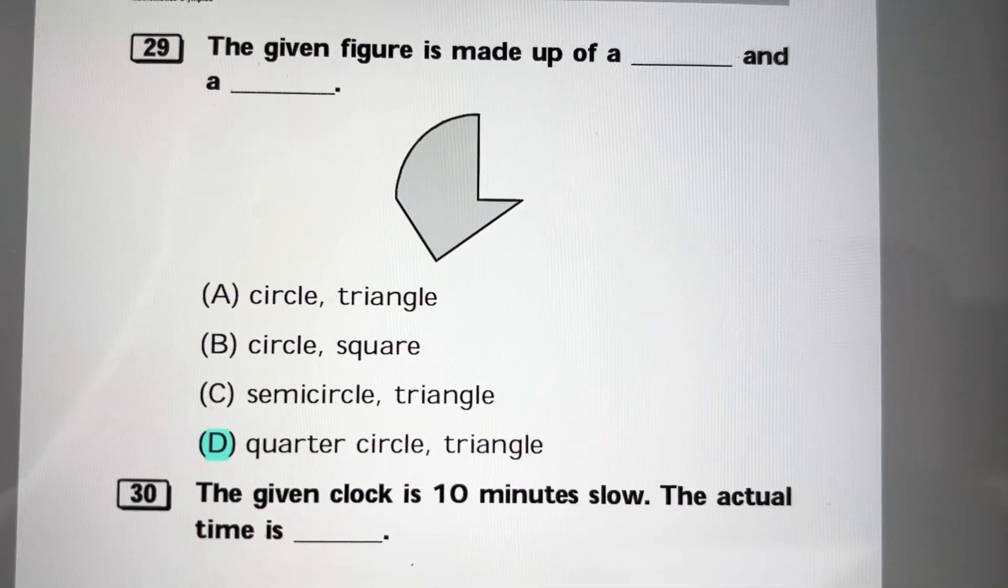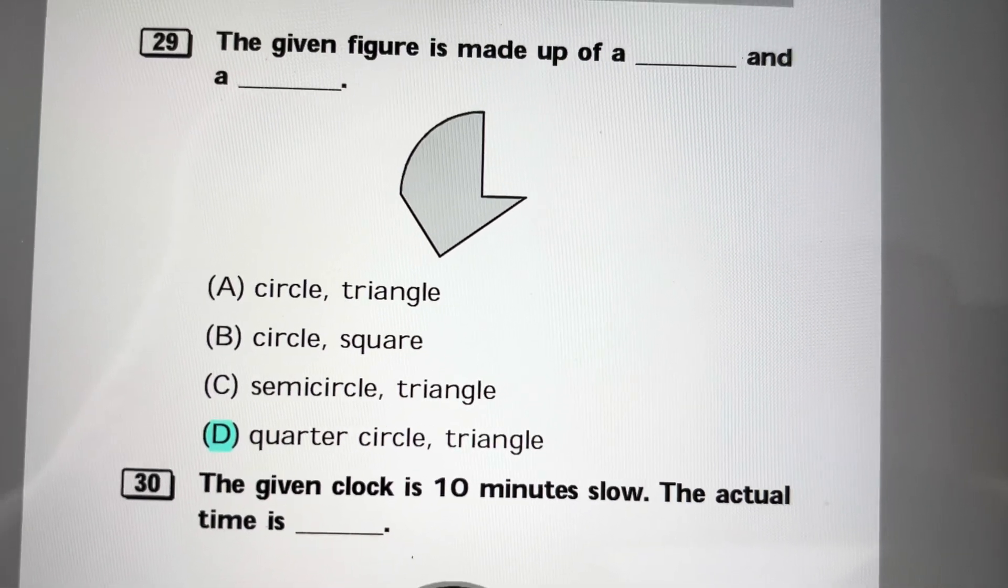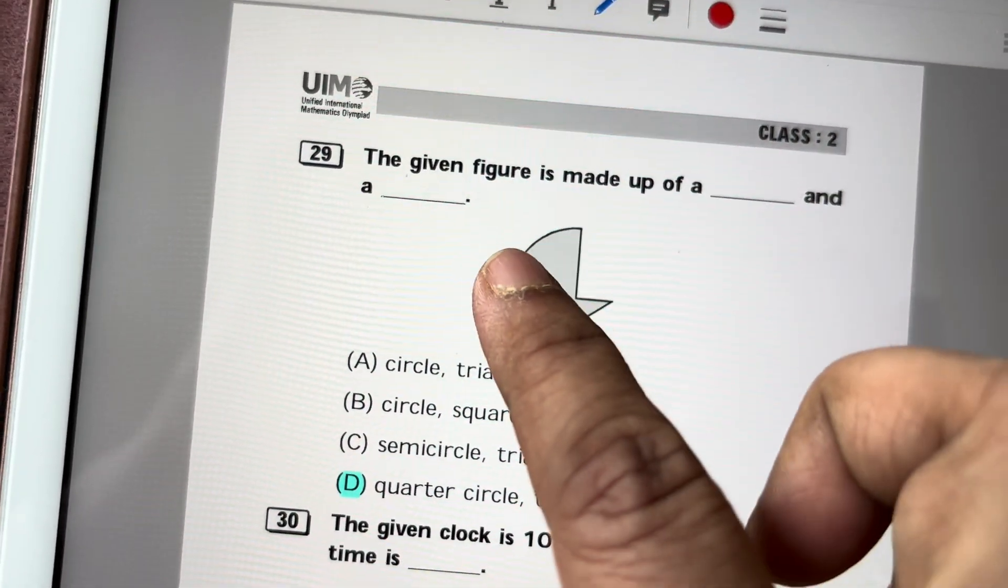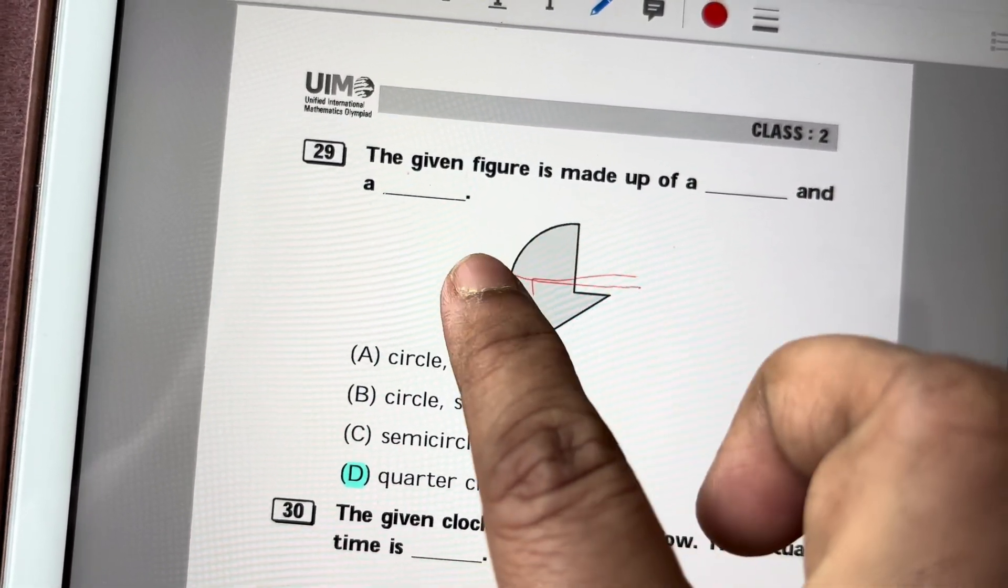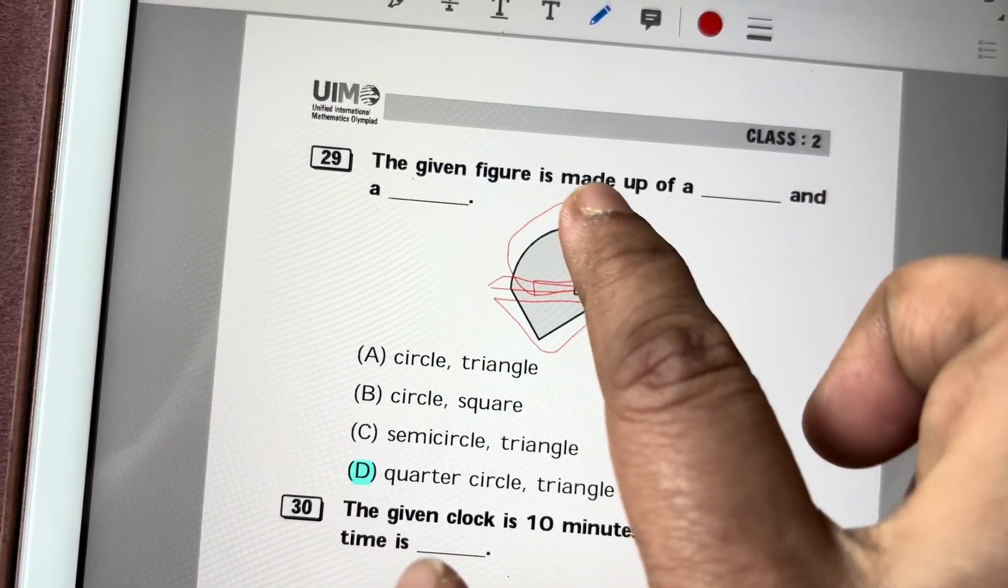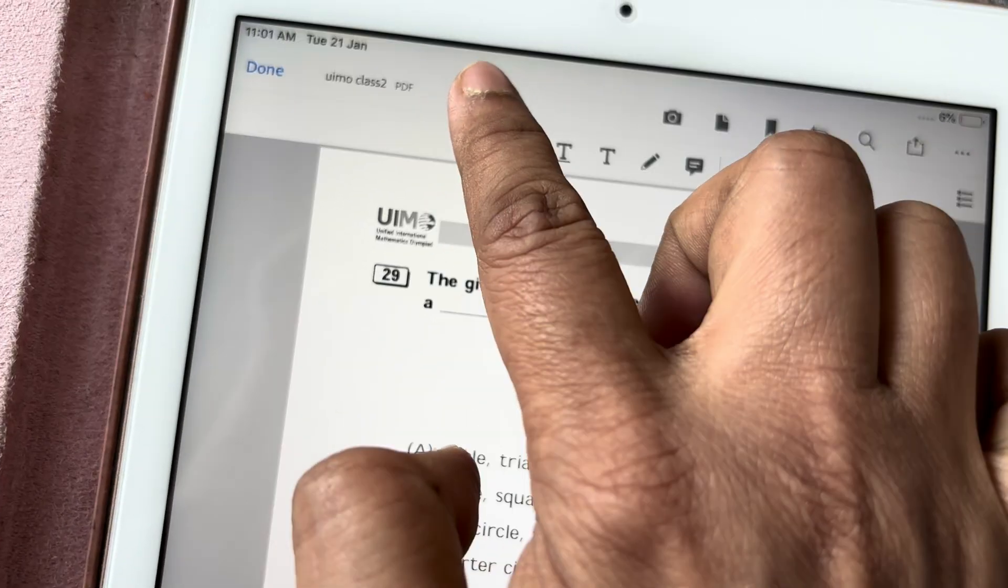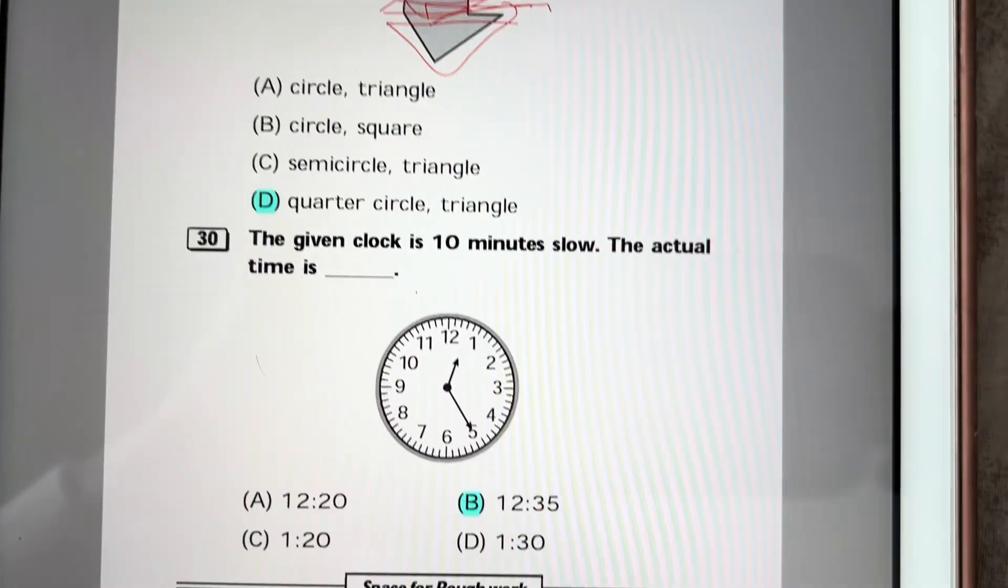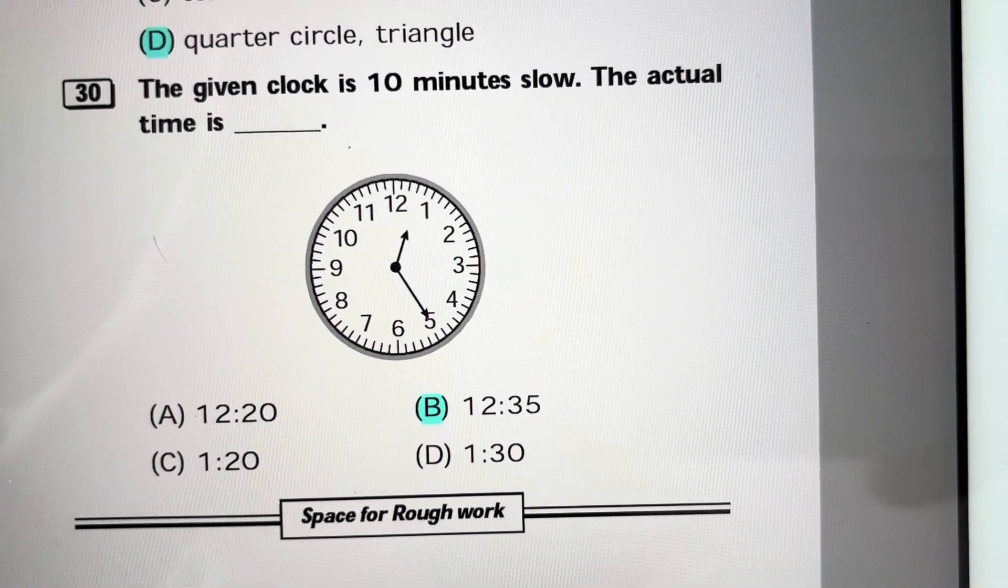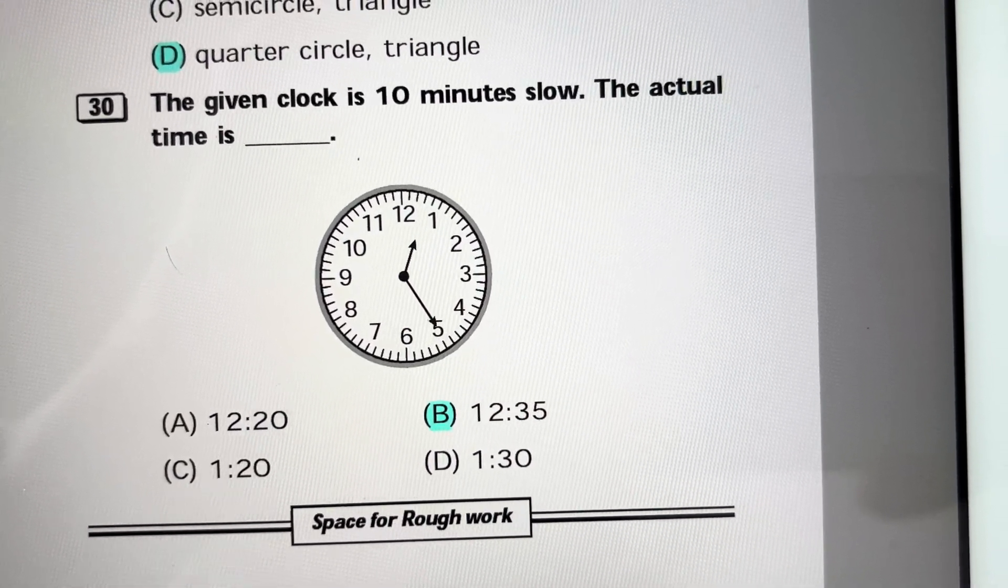The given figure is made up of, you can clearly see it is made up of one quarter circle and one triangle. Wait, sorry, this is triangle part and this is quarter circle. The given clock is 10 minutes slow. The actual time is, now it is showing 12:25, so the actual time is 12:35.